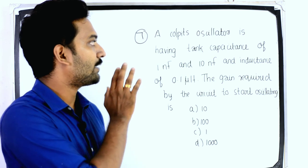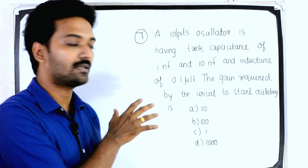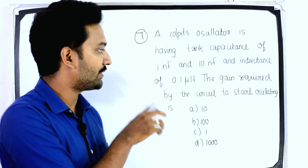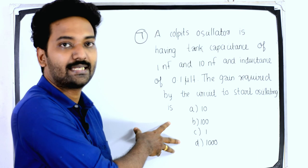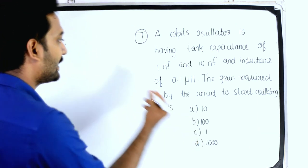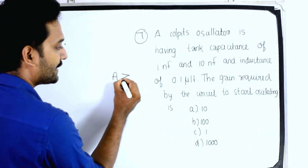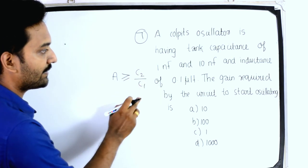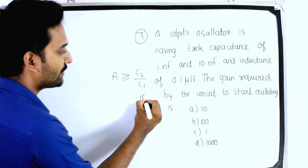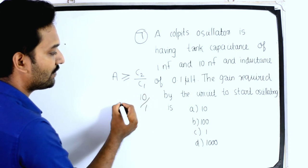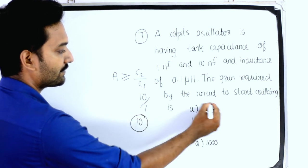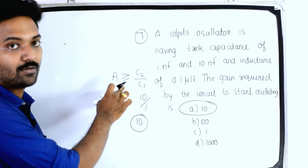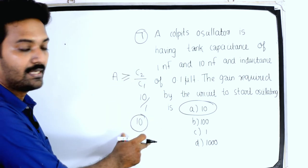Next question: a Colpitt oscillator has tank capacitances of 1 nF and 10 nF and inductance of 0.1 μH. The gain required by the circuit to start oscillating is A ≥ C2 / C1. Substituting: gain = 10 / 1 = 10. Option A is the answer.